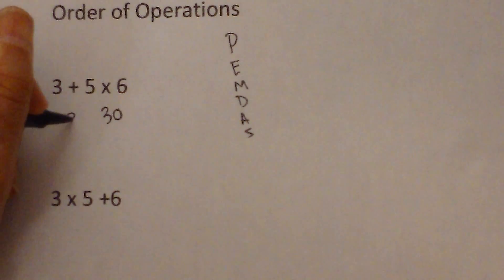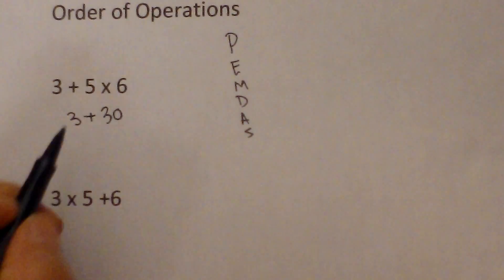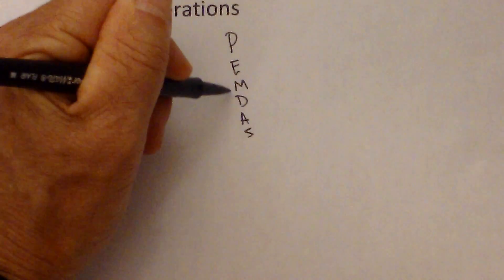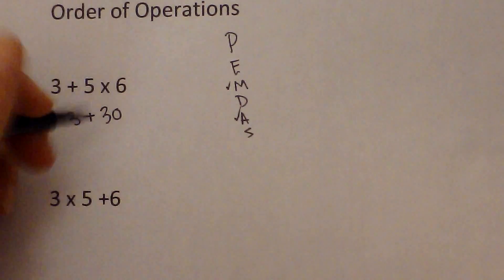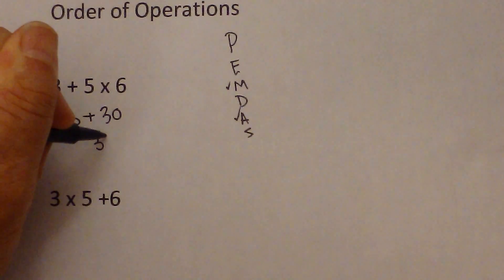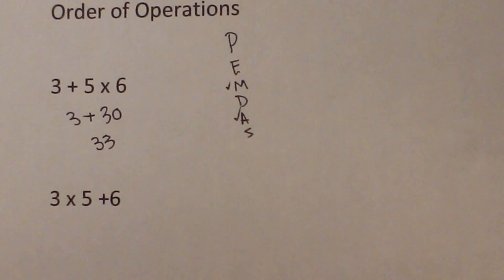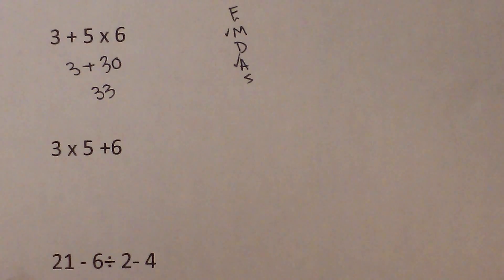I'm going to bring down the 3 this time. And next, so I've done multiplication and is there addition? Yes. 3 plus 30 is 33. So that is the correct answer.